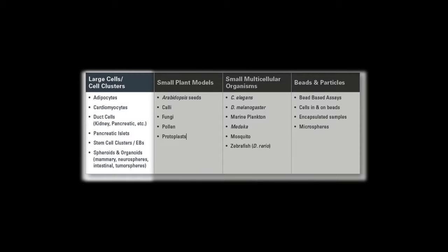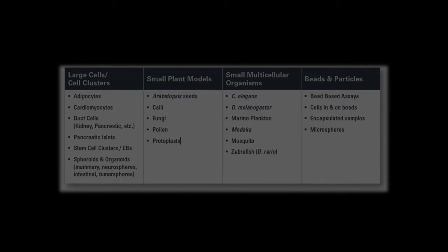Samples such as large cells and cell clusters, small plant models, small multicellular organisms, and large particles can all be processed on a single biosorter instrument.